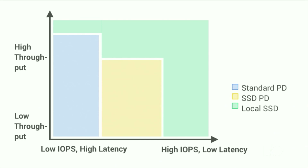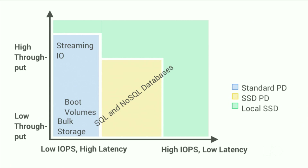So, given these three options, how do you decide which option is right for your application? Let's split it up by use case. First, boot volumes and bulk storage are great use cases for standard PD because those use cases require low IOPS and low throughput and basically just want to occupy the cheapest and reliable space available. Streaming I/O is a use case that works best for standard PD as well. While the other two options have a much lower cost per IOPS, the cost per throughput is generally better on standard PD. Reading large sequential blocks is what disks are good at.